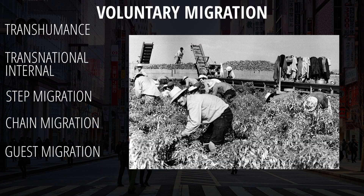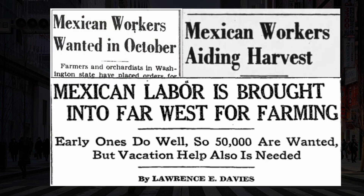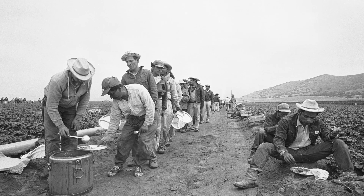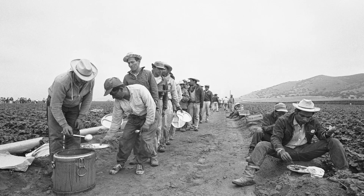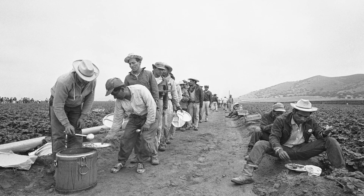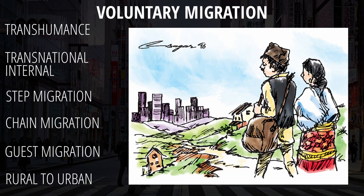Then there are guest workers — workers from a country who migrate to temporarily work in another country to make money and then eventually return to their home country. During the 1940s, when Americans were off in Europe fighting the war, there was a labor shortage and the U.S. hosted a guest worker program called the Bracero Program, which hosted nearly 5 million guest workers into the U.S., mostly for agricultural labor. The final form of voluntary migration is the rural-to-urban migration, which occurs as a country develops when farmers lose their jobs and move into the cities.